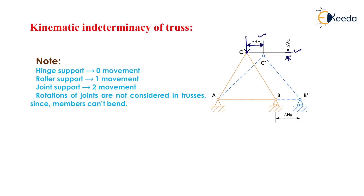At a hinge support, normally there is one degree of freedom which is rotation, but since rotation is not allowed in trusses, at a hinge support there will be zero degrees of freedom. At a roller support, normally there are two degrees of freedom, but since rotation is not considered, only one degree of freedom — horizontal displacement — remains. At each internal joint, there are two possible movements: vertical and horizontal.